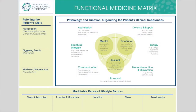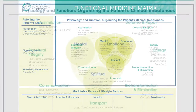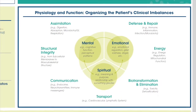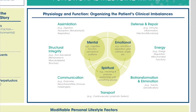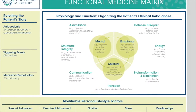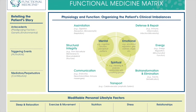The matrix helps identify the root causes of disease by organizing information from the patient's history, mapping their symptoms to one of seven key physiological systems, and assessing the main lifestyle factors that affect health.